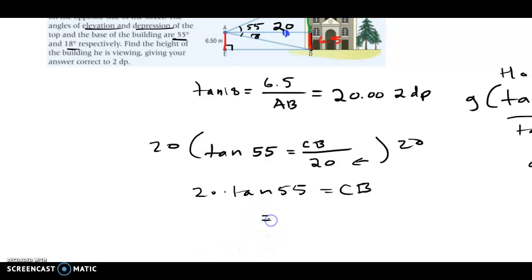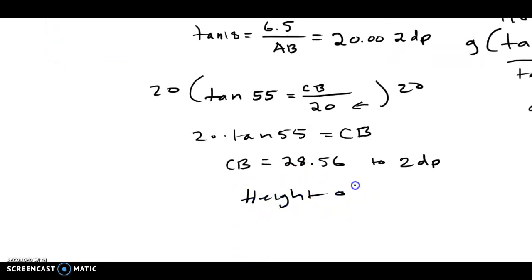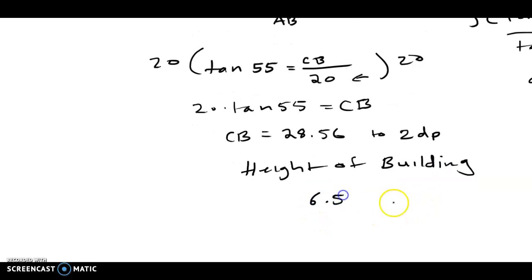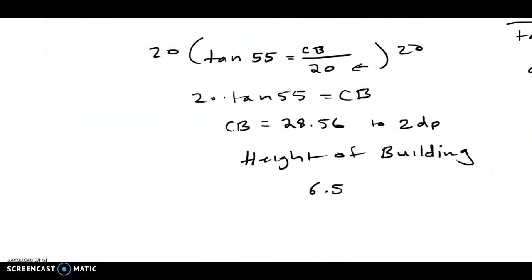And when we do that, we get to two decimal places, CB equals 28.56. So then we want to know the height. That's not the answer, we're not done. So the height of the building is that 6.5 that we know is the same, plus 28.56. And that gives us 35.06, and our units are meters. So that's the height.